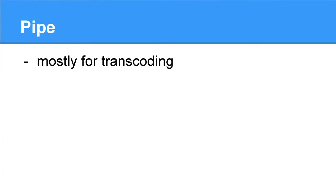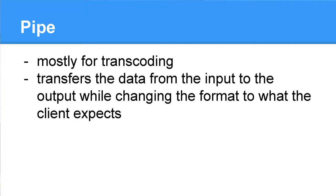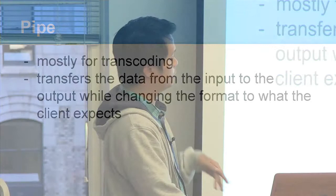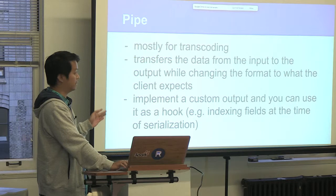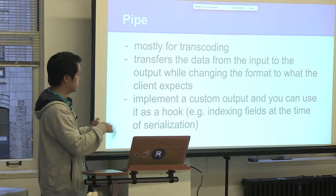This is the implementation, it's a pipe. The primary use case is for transcoding. It transfers the data from the input to the output while changing the format to what the client expects. Apart from that, you can also implement a custom output, and you can use it as a hook, so you can index fields at the time of serialization, or you can filter fields during serialization.